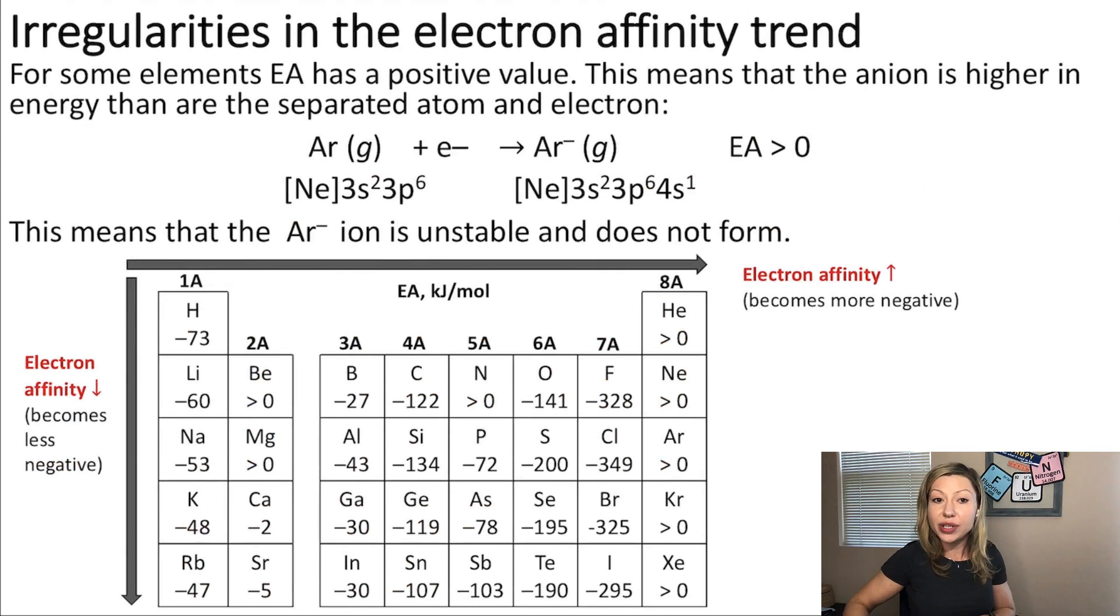Interestingly, for some elements, electron affinity has a positive value. This means that the anion, the negatively charged ion that you form, is going to be higher in energy than are the separated atom and the electron. So, this is going to mean that when your electron affinity is actually a positive value, the negatively charged ion will be unstable and it will not form.